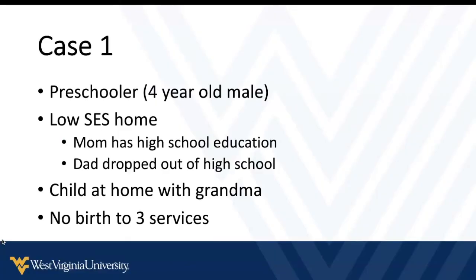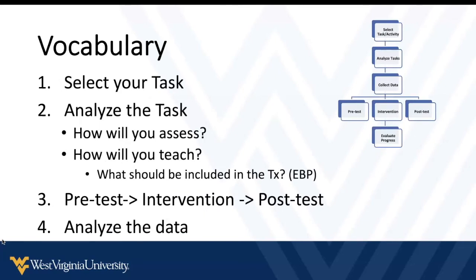For applied practice: consider a preschooler from a low SES home — mom has a high school education, dad dropped out of high school, he's been home with grandma, and has not received birth-to-three services. Because this may be his first structured classroom environment, his preschool teacher has concerns. Dynamic assessment with vocabulary as the target is a good choice — seeing how easily a child learns new words. You identify what to teach, how to assess it, and how to teach the words.